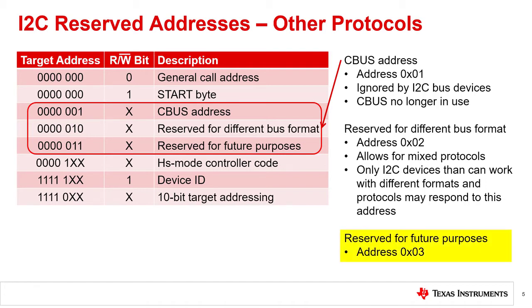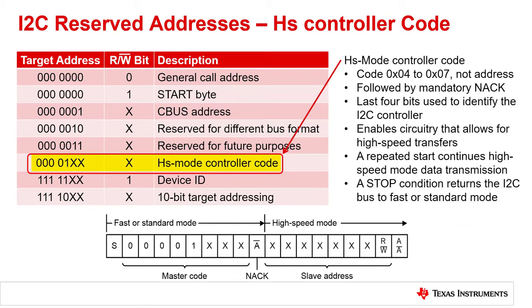Address 03 is reserved for future purposes. The next reserved addresses are for the high-speed controller code. These codes are from 04 to 07. The 8th bit normally used for read-write indication is used as part of the high-speed controller code. These high-speed controller codes are reserved 8-bit codes which are not used for target addressing or other purposes. Each high-speed controller has its own unique controller code and this allows for up to 8 high-speed controllers on the I2C bus.